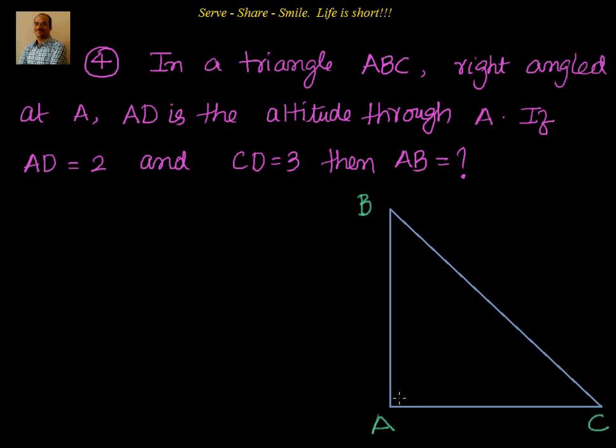Now we'll try to draw the AD altitude. Let me just do that. Let us say we have 90 degrees there, and that's the altitude from A to the point D onto BC.